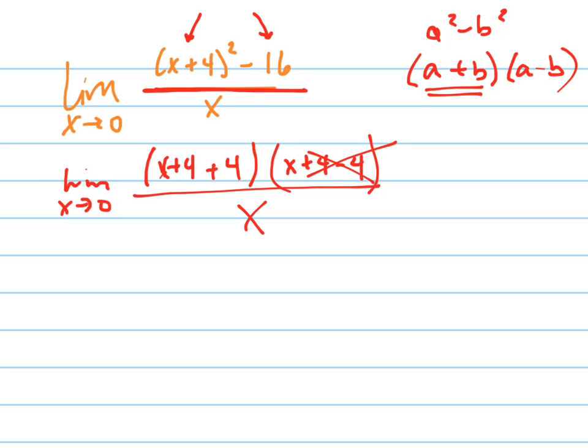That becomes just x, right there. So now what I have is x plus 8 times x all over x, and what's the limit as x goes to 0 of that?